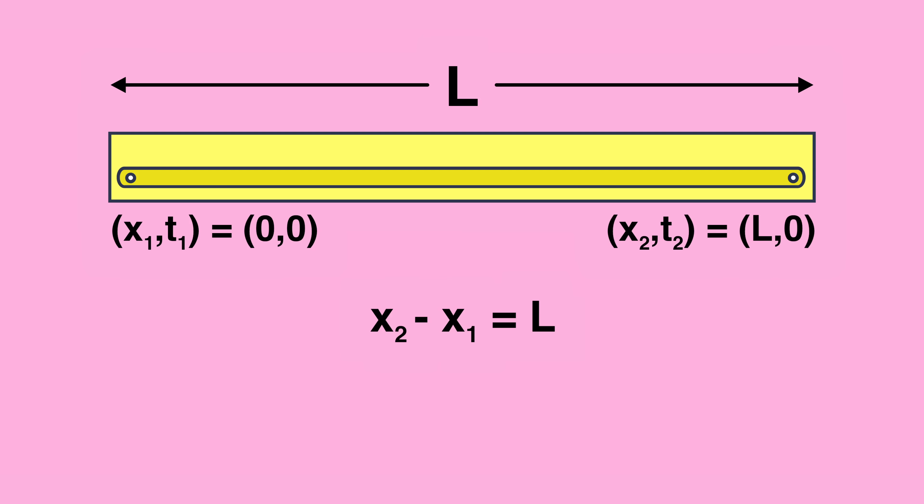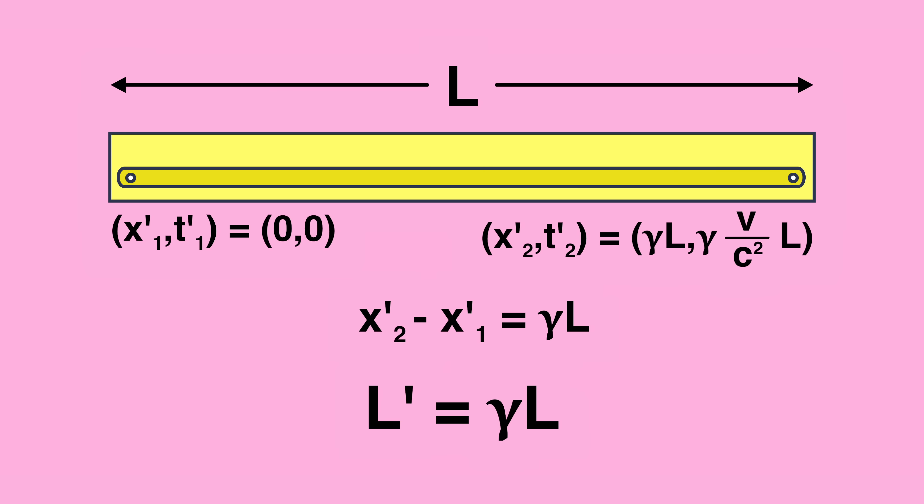So let's put those into the Lorentz transform equations and see what the primed observer sees. For location one, you get the same zero zero. But for location two, you get x2 equals gamma L and t2 equals gamma v over c squared times L. Pushing ahead, you could then subtract the two x's according to the primed observer and you'd get that the length according to the primed observer would be L prime equals gamma L. Since gamma is greater than one, that would mean that the moving observer would see a longer length than the stationary one.